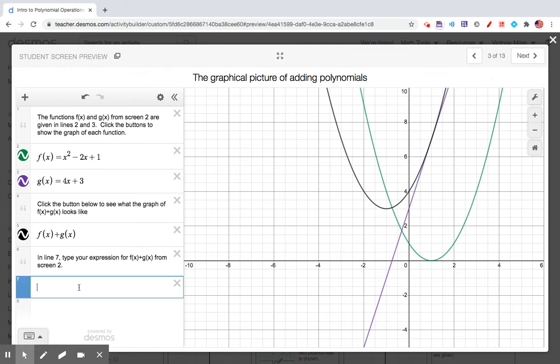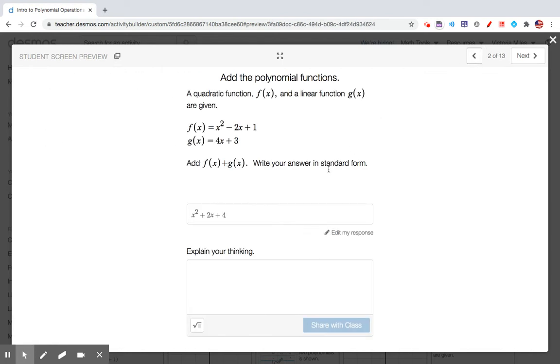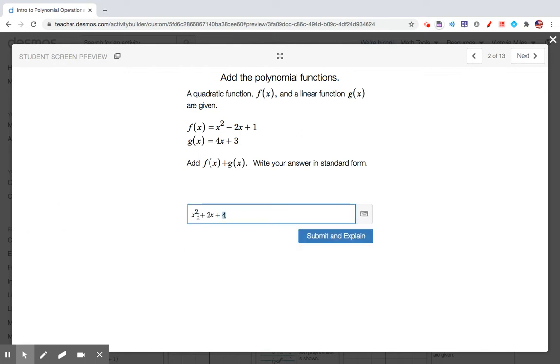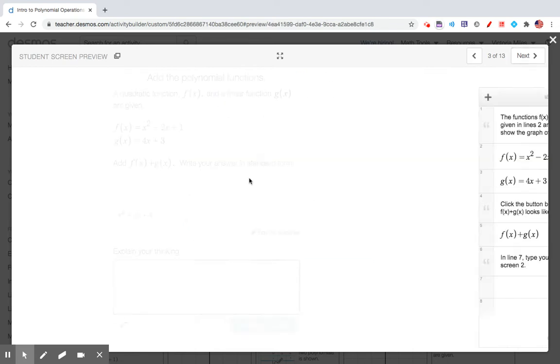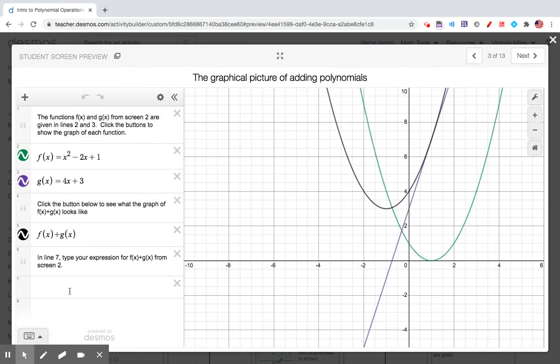To make sure that our answer in the previous screen was correct, we can copy and paste it. So whatever you had here as the sum, we can copy and paste it down right here on line 7. You'll notice that the sum went on top of what we had for f of x plus g of x. So I know that my answer from the previous screen was correct.